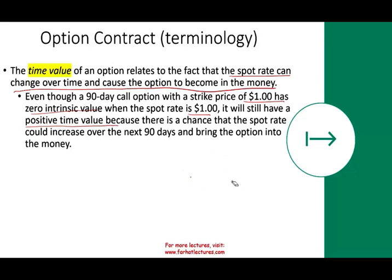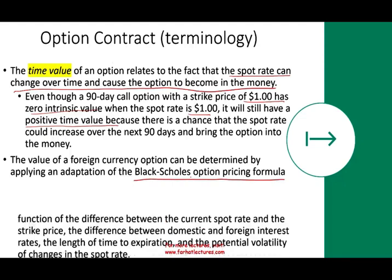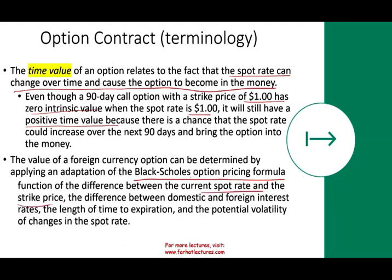So the option has two components: intrinsic value — how much profit you'd make if you exercised it today — and time value — how much time you have before expiration. The value of a foreign currency option can be determined using the Black-Scholes option pricing model, which is covered in international finance and is a function of the difference between the spot rate and the strike price, the difference between domestic and foreign interest rates, the length of time to expiration, potential volatility, macroeconomic factors, and other variables.